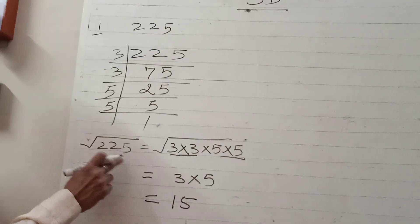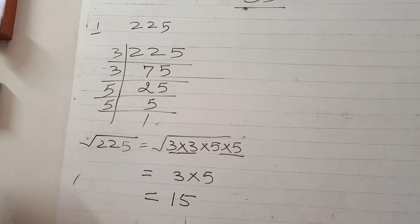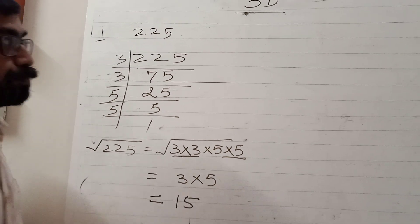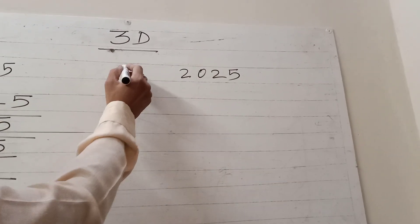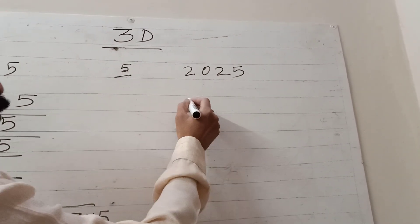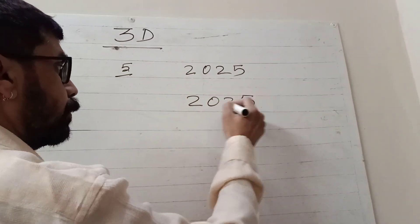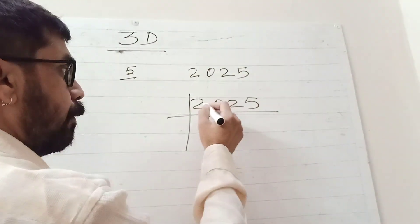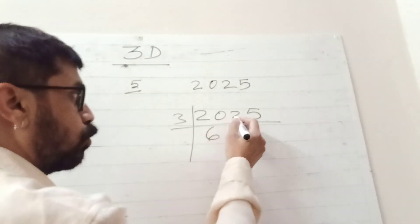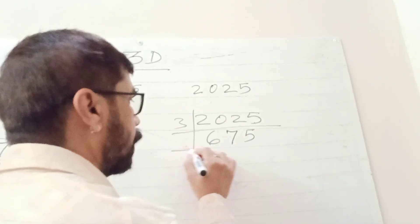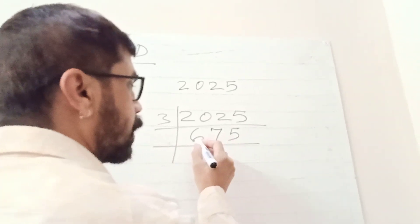The second question is given: 2025, that is question number 6. Again, we will do its prime factorization. 3 goes into 2025 to get 675. It is also divisible by 3: 3 goes into 675 to get 225.